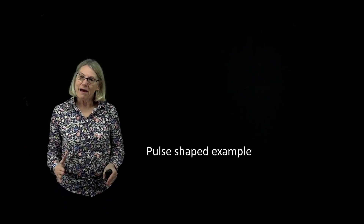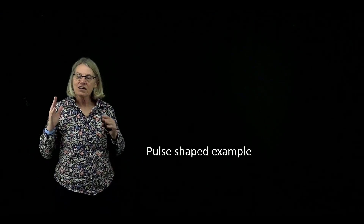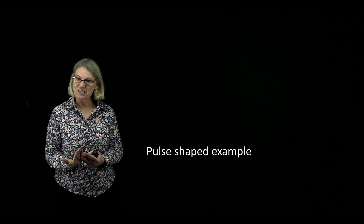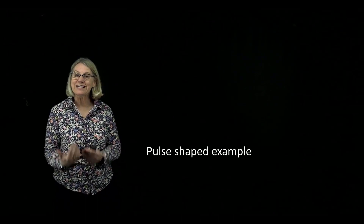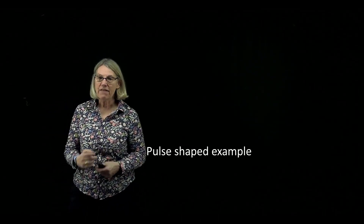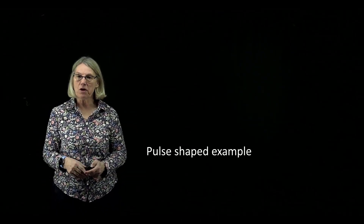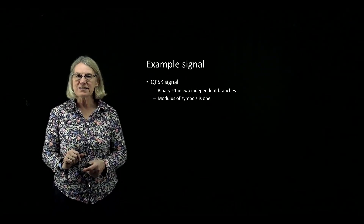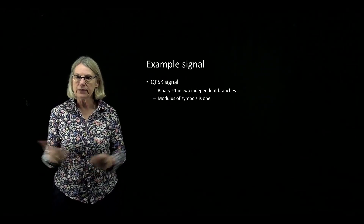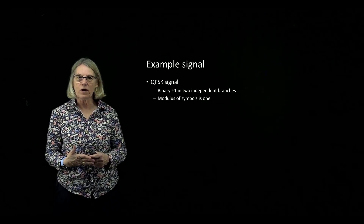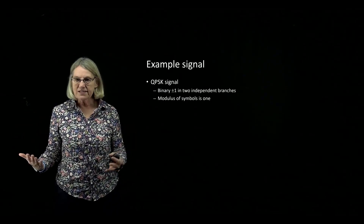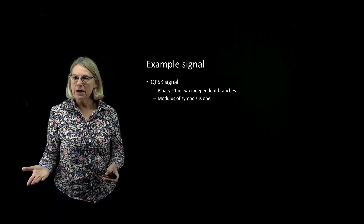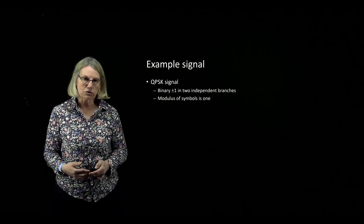In this lecture we're talking about the constant modulus algorithm, but before launching into the details I want to explain the example I've chosen. This example is a shaped pulse and it's a QPSK signal — a binary signal in two independent branches, in phase and quadrature. The QPSK signal goes from plus to minus 1 and has a modulus of each symbol exactly equal to 1.